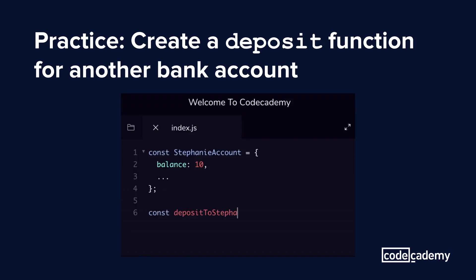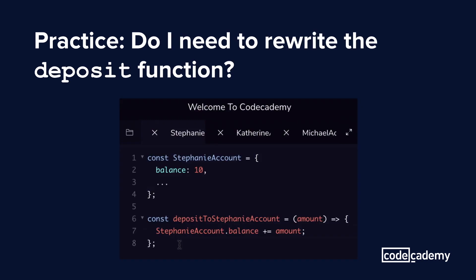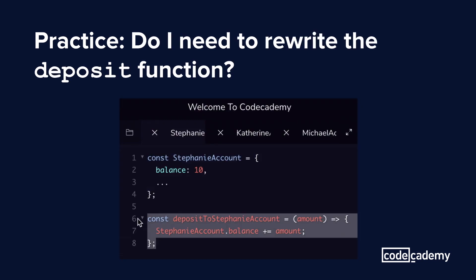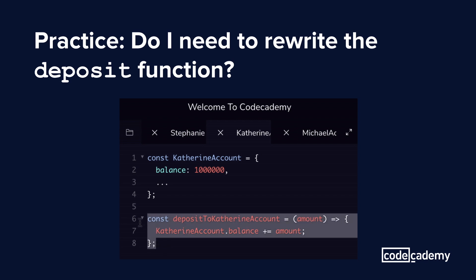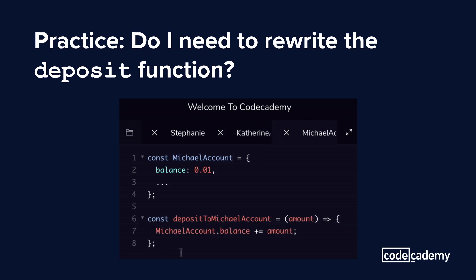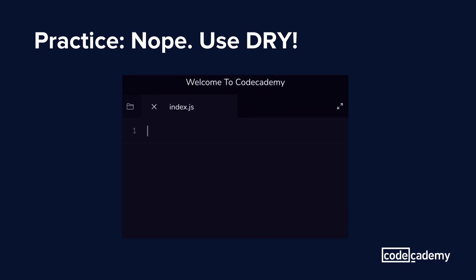Say for example I have this bank account, and I'm writing a function to deposit any amount of money in my account. I think I've seen this somewhere before. Going through some old code, I see that I've already written the same deposit logic for two other accounts — one for Katherine's account and one for Michael's account.